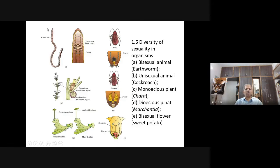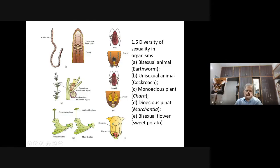Look at earthworm — you see testis and also ovary. Therefore this is called hermaphrodite. What do you see in cockroach? Male with the testis, female with the ovary. So cockroach is an example for unisexual animal, or dioecious.